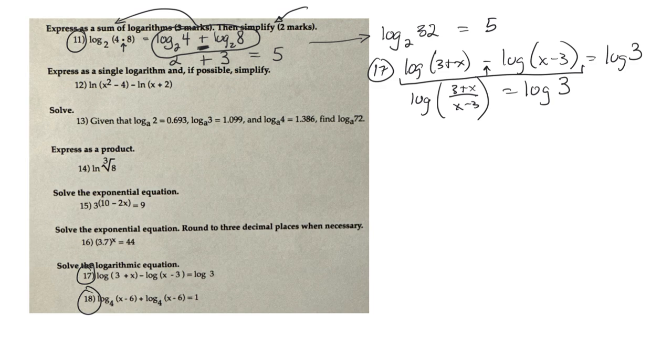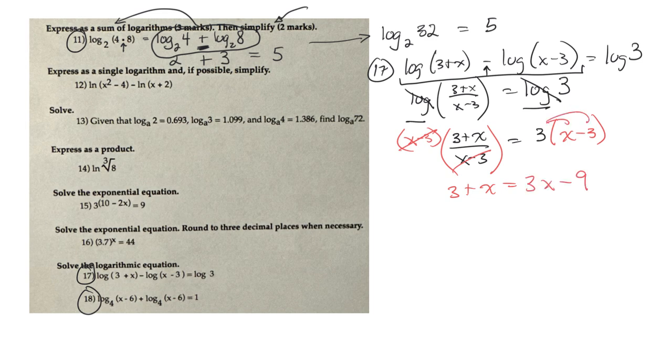So once I've squished them, if I have a log on this side and this side, I can just drop those logs. So I'll have 3 plus x over x minus 3 is equal to 3. Then I'll use the clear fractions rule. So I'll multiply this side by an x minus 3 to get rid of it on the bottom. But if I multiply the left side, I have to also multiply the right side.